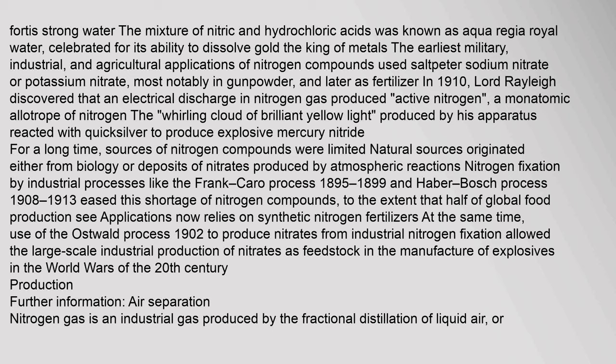In 1910, Lord Rayleigh discovered that an electrical discharge in nitrogen gas produced active nitrogen, a monatomic allotrope of nitrogen. The whirling cloud of brilliant yellow light produced by his apparatus reacted with quicksilver to produce explosive mercury nitride. For a long time, sources of nitrogen compounds were limited. Nitrogen fixation by industrial processes like the Frank-Caro process (1895–1899) and Haber-Bosch process (1908–1913) eased this shortage, to the extent that half of global food production now relies on synthetic nitrogen fertilizers.